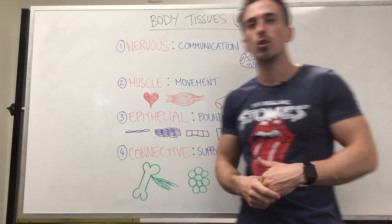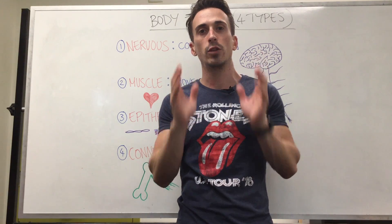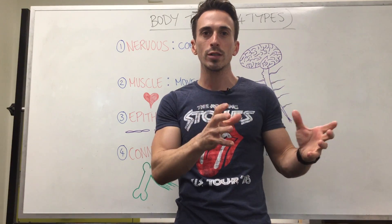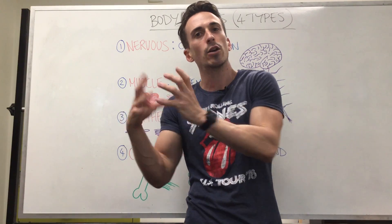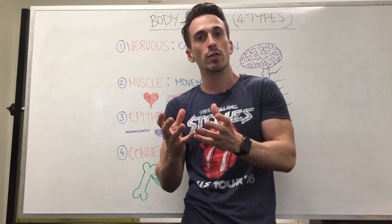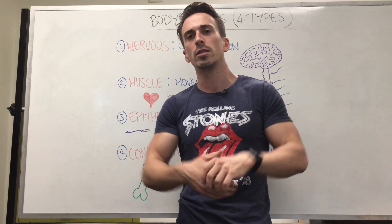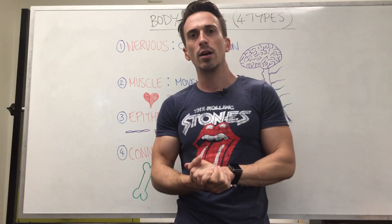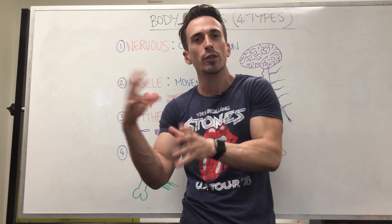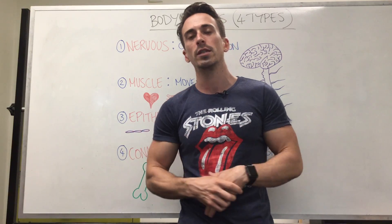Starting with nervous tissue — this is the tissue of the nervous system, made up of neurons and glia. Glia is Greek for glue; they're the supporting cells of the neuron. There are many different types: oligodendrocytes, Schwann cells, ependymal cells, and astrocytes — all different types of supporting cells of the nervous system.